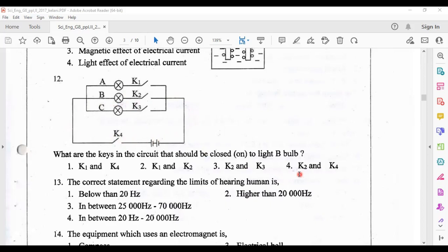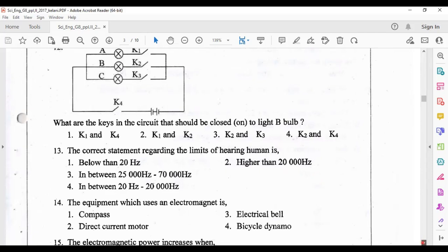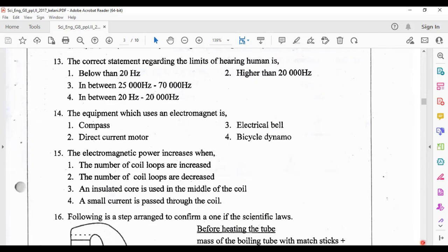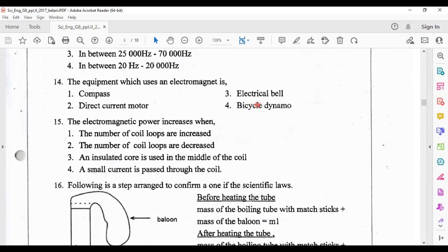Question 13: the correct statement regarding the limit of hearing is answer four, in between 20 hertz to 20,000 hertz. The equipment which uses an electromagnet is answer three, electrical bell.